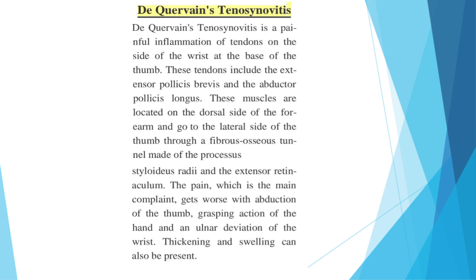In this lecture, we will discuss De Quervain's Tenosynovitis. In this condition, the tendon sheath — the synovial sheath covering the tendons — becomes inflamed. It is a painful inflammation of the tendons on the side of the wrist at the base of the thumb.